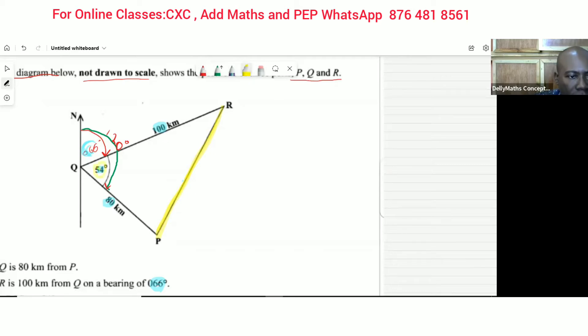They want us to find that distance to two decimal places. Definitely we're seeing that we have an angle between two known sides here, so the cosine rule. The cosine rule is what we're going to be employing now. So the cosine rule says the side across from the angle squared is equal to 100 squared plus 80 squared minus 2 times 100 times 80 times the cosine of the angle which is 54 degrees.